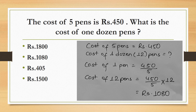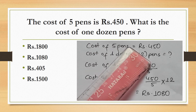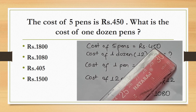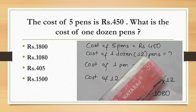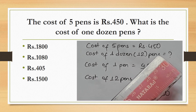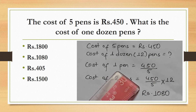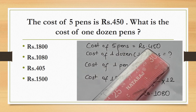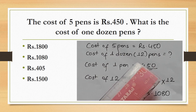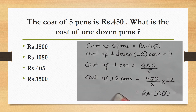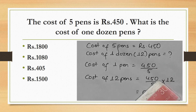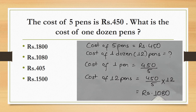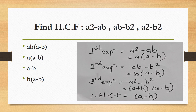The cost of 5 pence is Rs.450. What is the cost of 12 pence? Cost of 1 pence = 450/5. Cost of 12 pence = (450/5) × 12 = Rs.1,080.